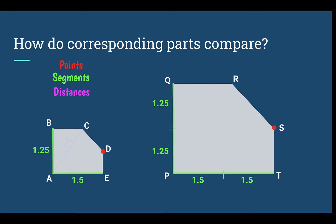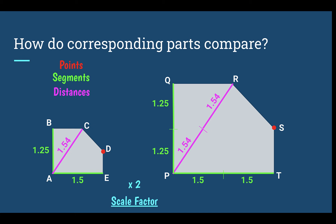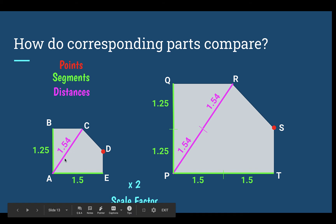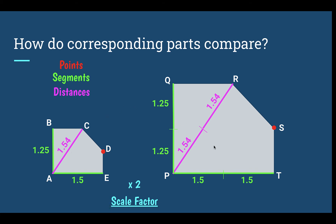The distance from A to C is 1.54, and in the larger shape that same distance is 1.54 times two. Everything was multiplied by two. This is called the scale factor — a key term you need to know. The scale factor is how much you multiplied by to go from one shape to the next. In the original, everything is the original size; in the copy, everything is now twice as big, times two.